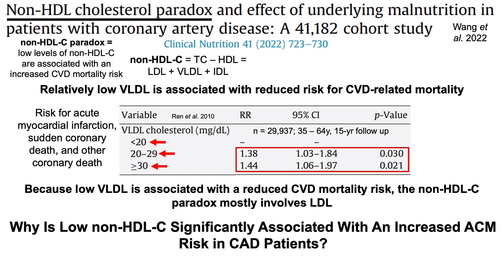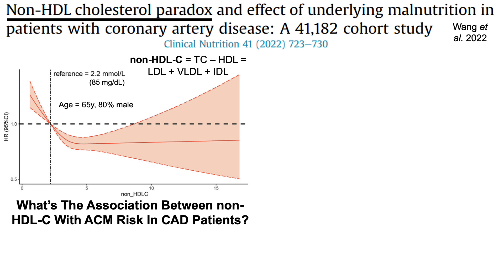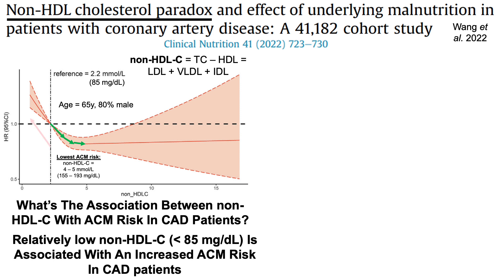So why is low non-HDL cholesterol significantly associated with an increased all-cause mortality risk in coronary artery disease patients? Looking at the association between non-HDL cholesterol and all-cause mortality risk: this study involved people with an average age of 65, and it was 80% men. The lowest all-cause mortality risk in this population had a non-HDL cholesterol level of 4 to 5 millimolar, approximately 155 to 193 milligrams per deciliter. But we can also see the non-HDL cholesterol paradox — less than 85 mg/dL was significantly associated with an increased all-cause mortality risk in CAD patients.